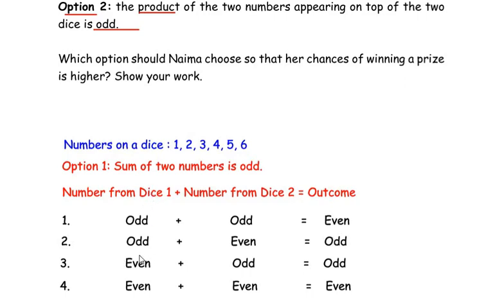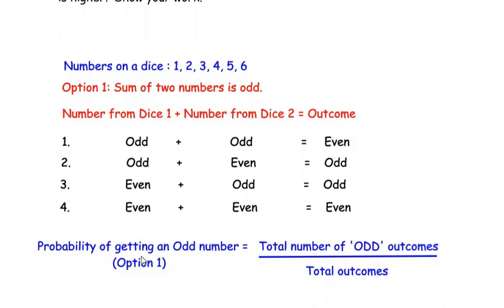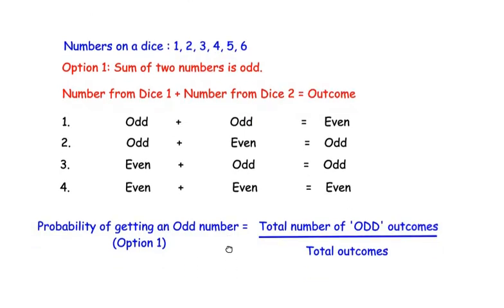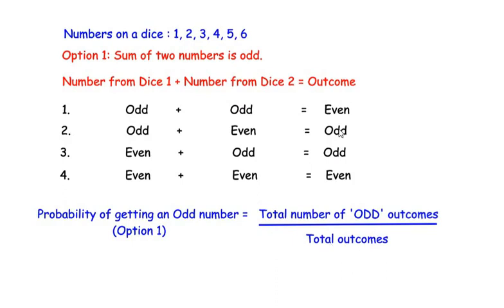Third, dice 1 gives an even number and dice 2 gives an odd number — for example, 2 plus 1 equals 3, which is odd. Outcome is odd. Fourth, both dice give even numbers — for example, 2 plus 6 equals 8, which is even. So out of 4 outcomes, there are 2 odd outcomes. Therefore, the probability of getting an odd sum for option 1 is 2 divided by 4, which equals 1 over 2.